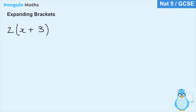To finish up this lesson, let's look at what we do when we have a number or variable outside a single bracket. Here we have 2 outside the brackets, with x plus 3 inside. Having a 2 outside the bracket means 2 multiplied by everything inside the bracket. So we do 2 multiplied by x which gives 2x, and 2 multiplied by 3 which gives 6. So 2(x + 3) expands to 2x plus 6.